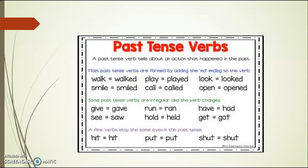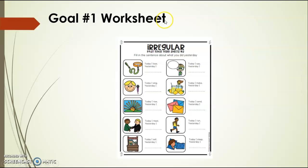There are some words that actually change. For example, 'give' becomes 'gave,' 'see' becomes 'saw,' 'run' becomes 'ran' — those words change a little when you put them into past tense. Then there are a few verbs that stay the same, like 'hit' — in past or present it's still 'hit.' Same with 'put' and 'shut' — those words don't change whether you're talking about past tense or present.